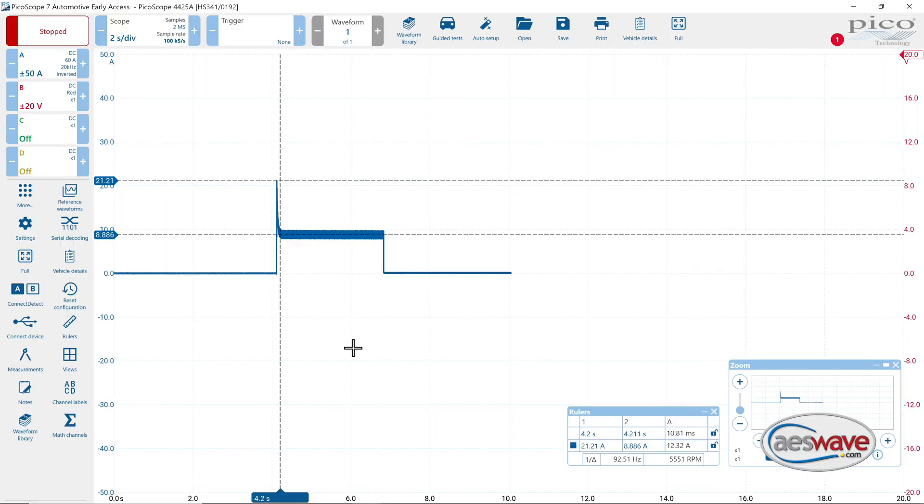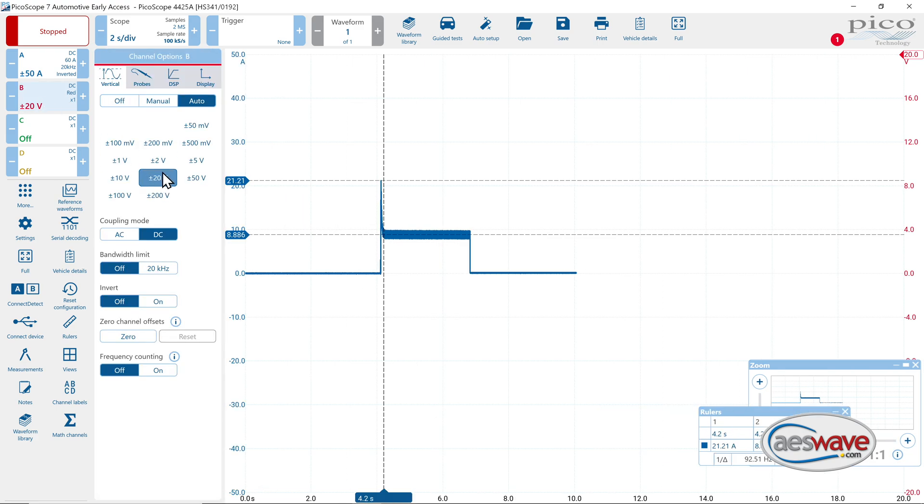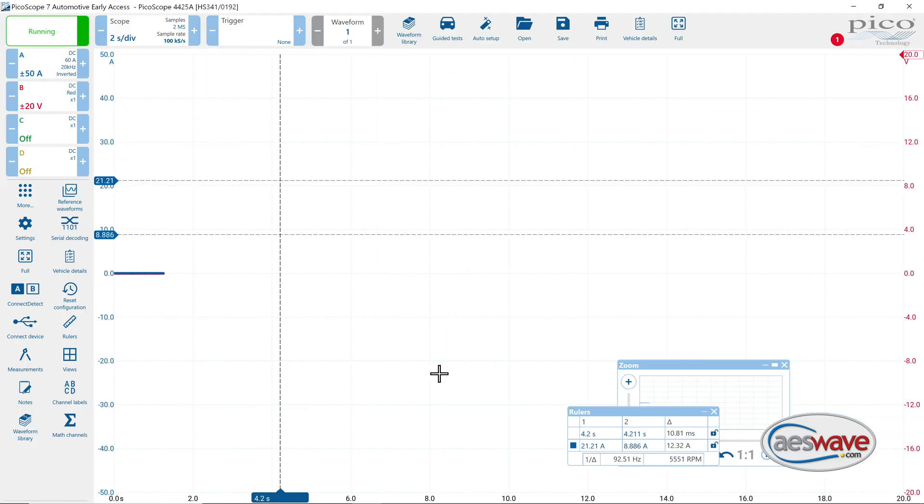Then we just need to set the scope up. I'm going to go to channel B, I'm going to manually set it to 20 volts, and I'm going to hit start on the scope.